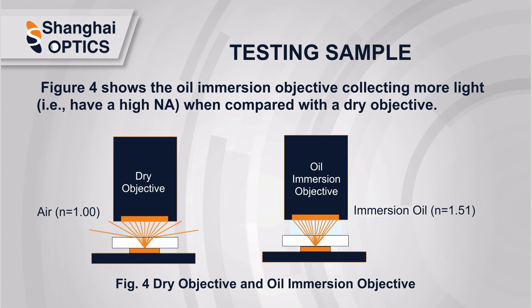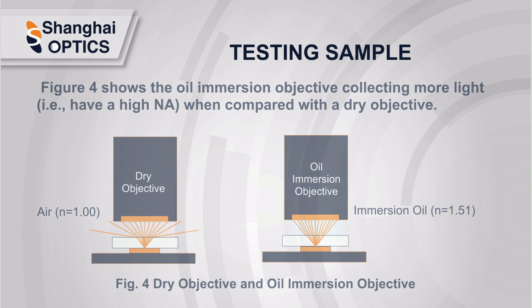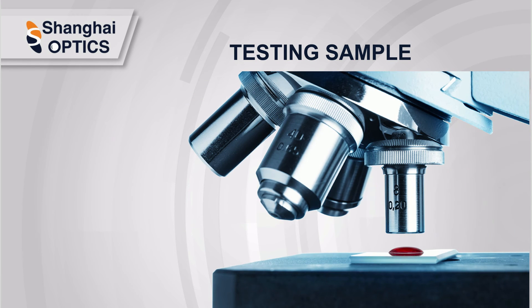A dry objective is designed to work with the air medium between the specimen and the objective lens, while an immersion objective requires a liquid medium to occupy the space between the object and the front element of the objective, enabling a high numerical aperture and high resolution. Figure 4 shows the oil immersion objective collecting more light when compared with a dry objective. The most common immersion media are air, water, oil, and silicone. Choosing the appropriate objective designed for your immersion medium will result in high resolution images.